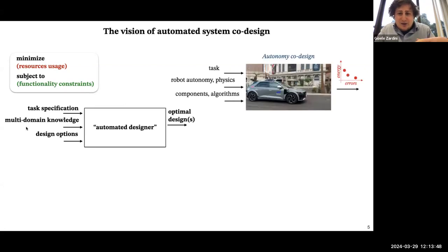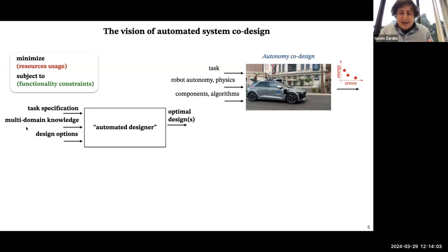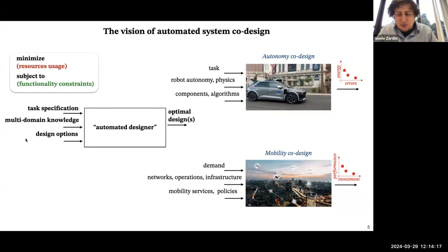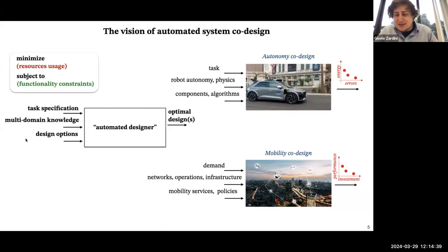To be a bit more concrete, think about the context of autonomy — designing an autonomous vehicle. We specify the tasks the vehicle should perform, then we specify robot autonomy and physics principles. The things we want to design are the components and algorithms, and the performance metrics could be errors with respect to the task and energy consumption. The very same approach can be scaled up to designing an entire mobility ecosystem, where the task could be thought of as the demand and traveler preferences, the principles are network and infrastructure principles, and what you design are the mobility services or policies.